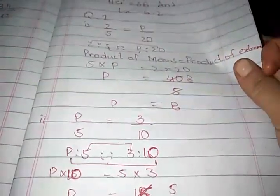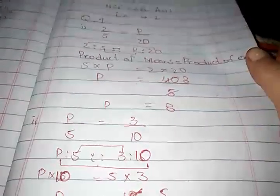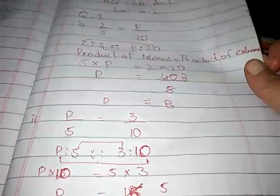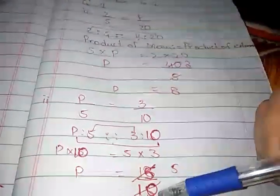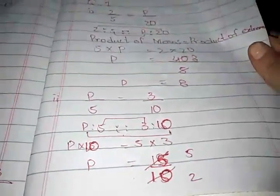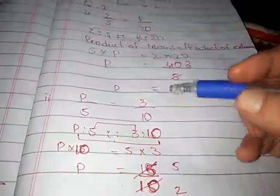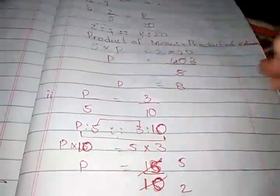Number 2 is P by 5 equal to 3 by 10. Again we use the product of means and product of extremes formula. P ratio 5 proportion 3 ratio 10. Means are 5 multiplied by 3, and extremes are P multiplied by 10. 5 × 3 = 15. Since 10 cannot be multiplied with P, 15 is divided by 10. The value of P is 3/2.